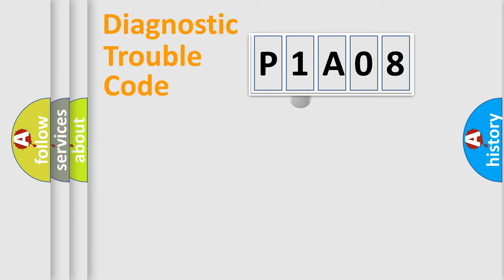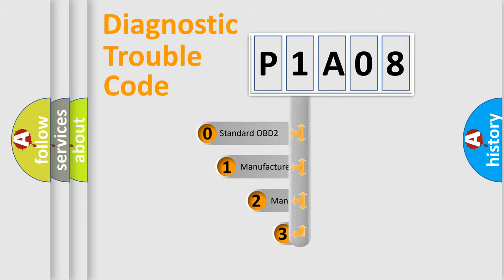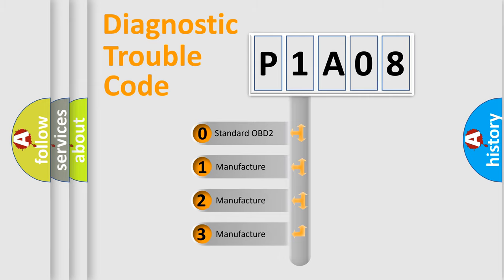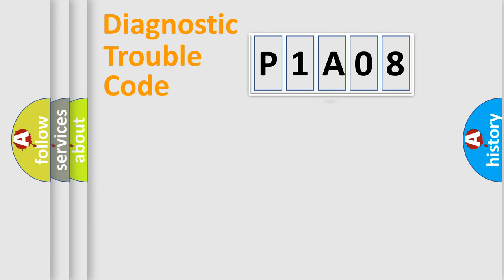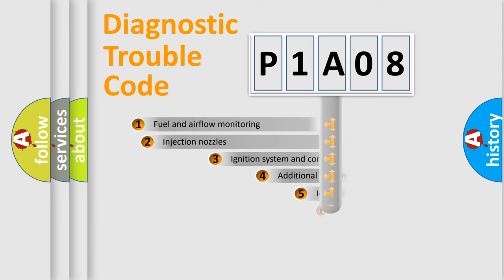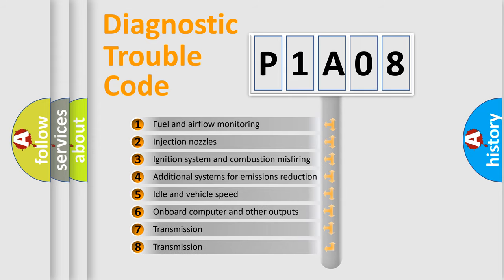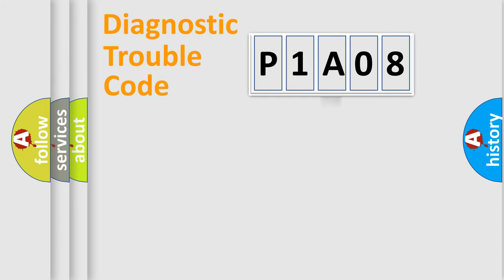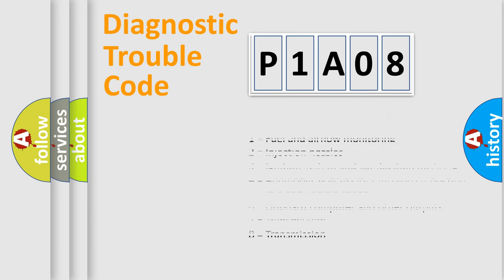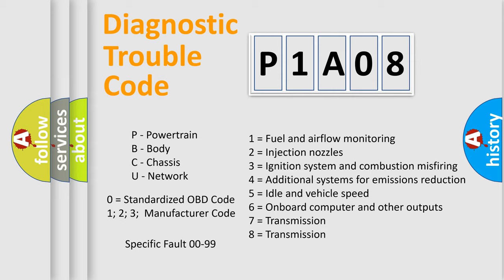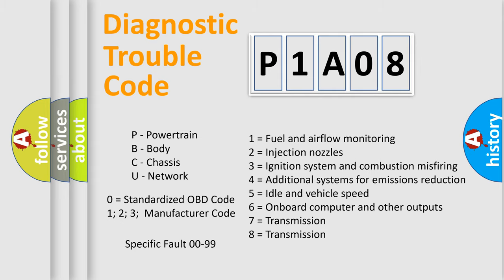This distribution is defined in the first character of the code. If the second character is expressed as zero, it is a standardized error. In the case of numbers 1, 2, or 3, it is a manufacturer-specific error. The third character specifies a subset of errors. This distribution is valid only for the standardized DTC code, and only the last two characters define the specific fault of the group.